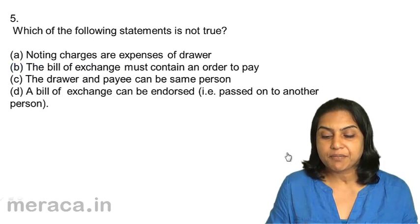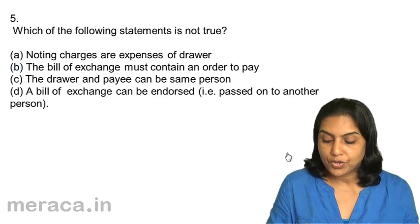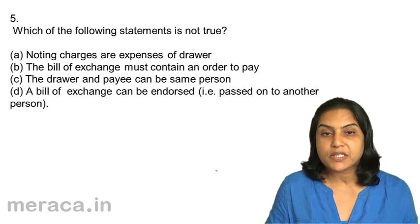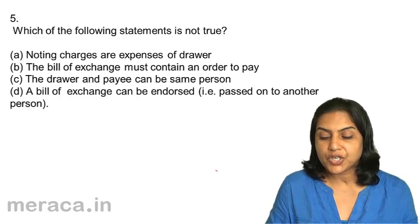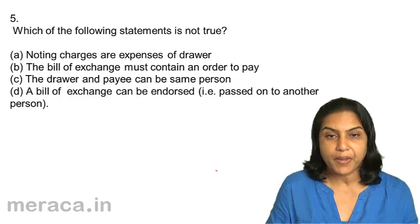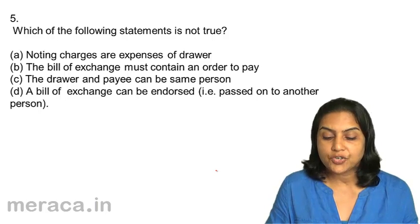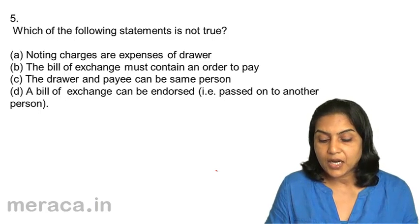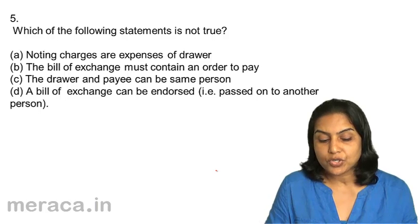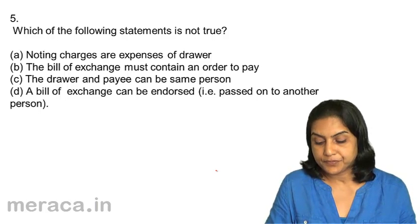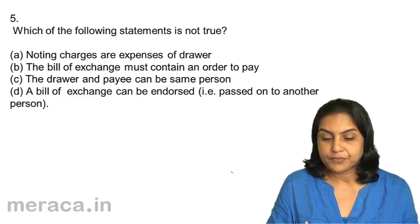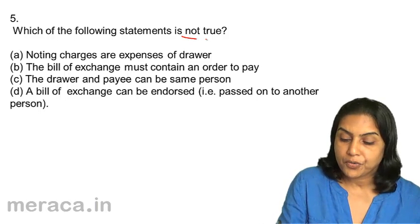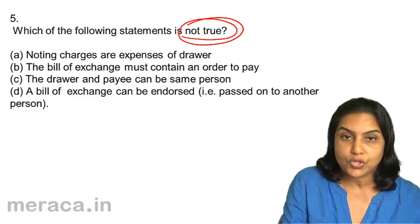Question 5: Which of the following statements is not true? A. Noting charges are expenses of drawer. B. The bill of exchange must contain an order to pay. C. The drawer and the payee can be the same person. D. A bill of exchange can be endorsed, that is passed on to another.